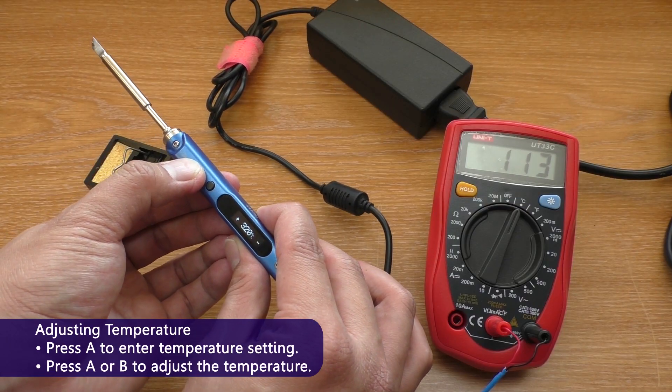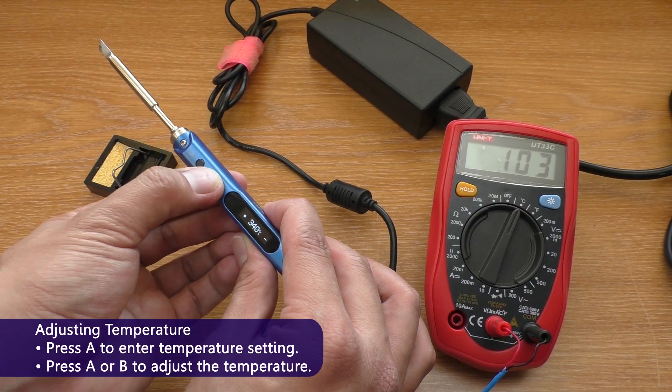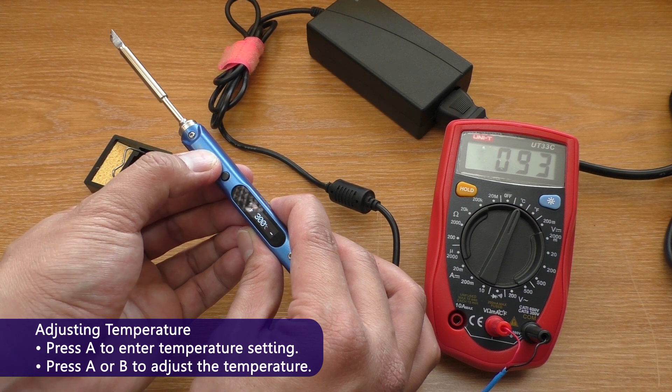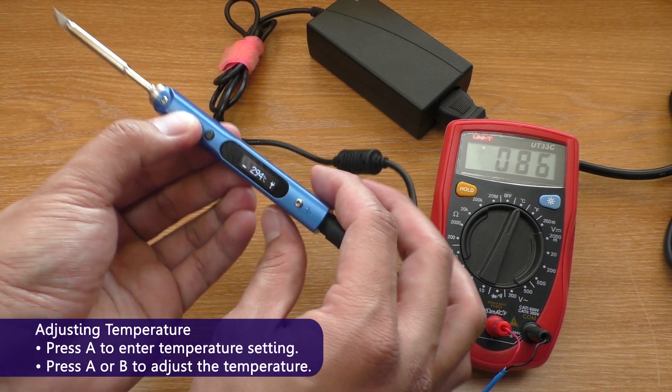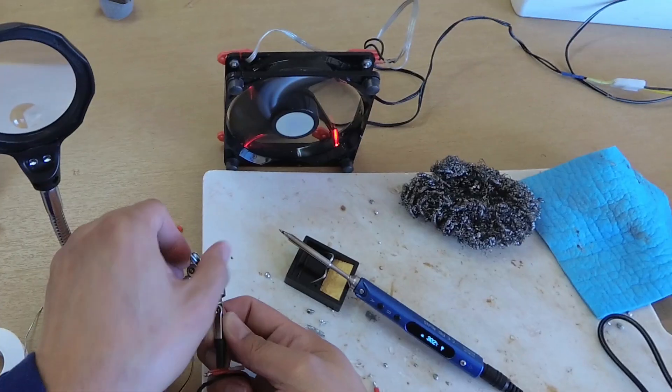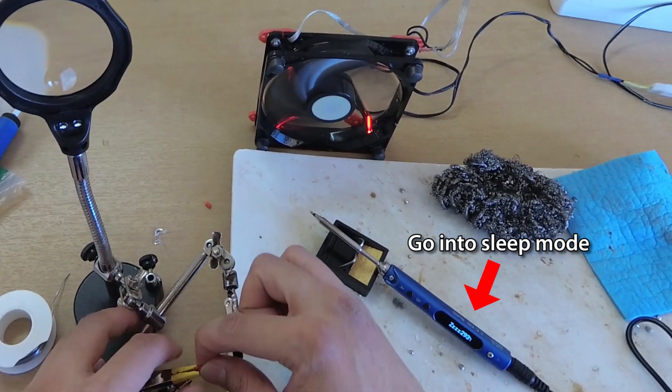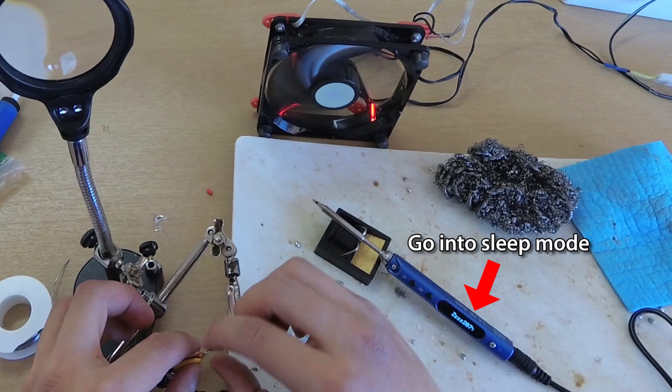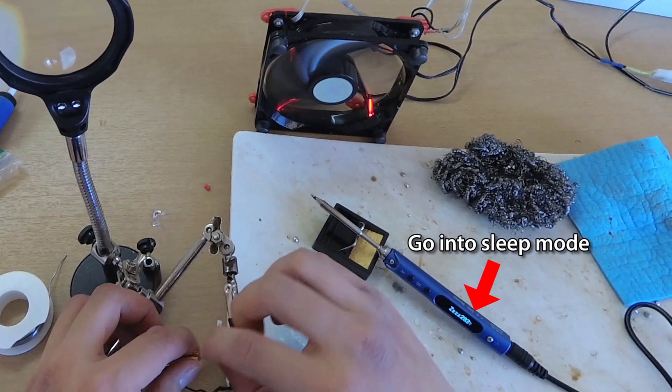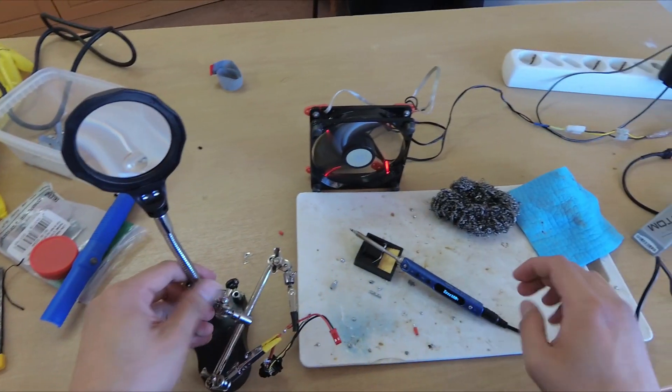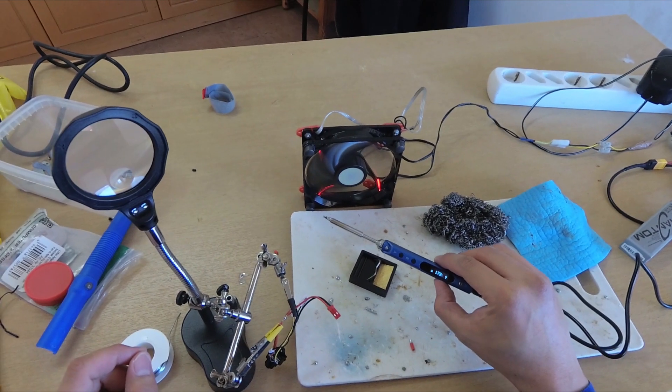To adjust the temperature press A to go to temperature setting. Then A or B to adjust the value. There are more features like sleep and shut down. If you don't move it for a certain period of time it'll go into sleep mode and cool down automatically. There's also low voltage cut off for LiPo battery.